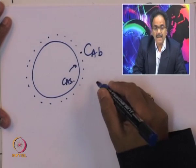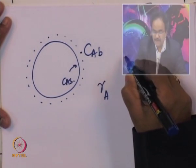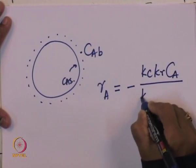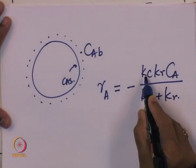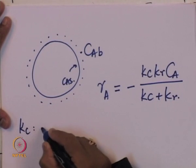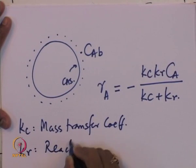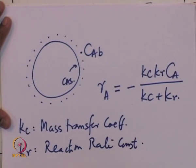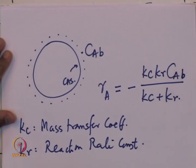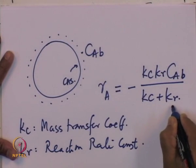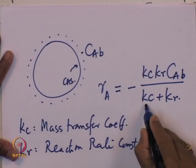In that case, the overall rate for a first-order reaction can be given as: ra = -kc·kr·CA / (kc + kr). Here kc is the mass transfer coefficient and kr is the reaction rate constant. We express everything in terms of the bulk concentration CAb, and that is the main motivation behind deriving this equation. Note that the units of kc and kr must be the same.